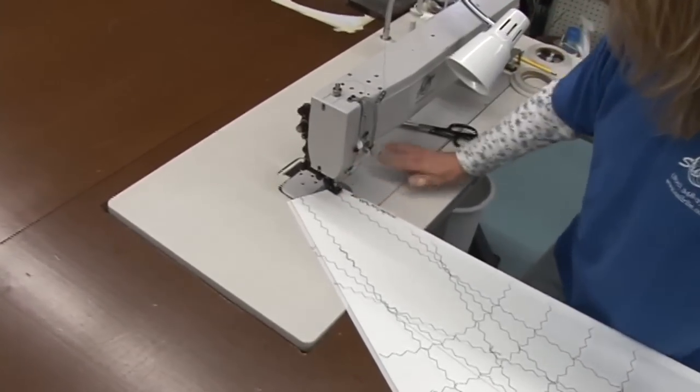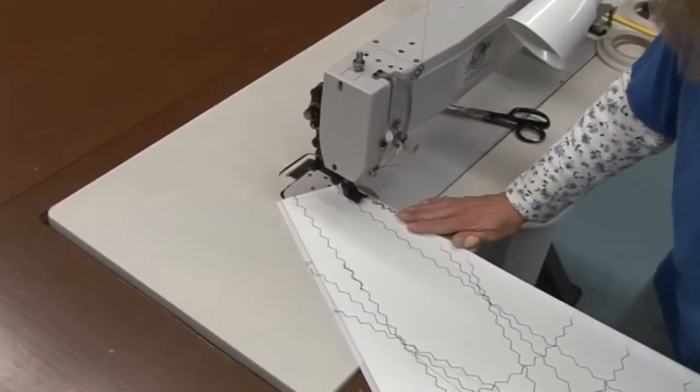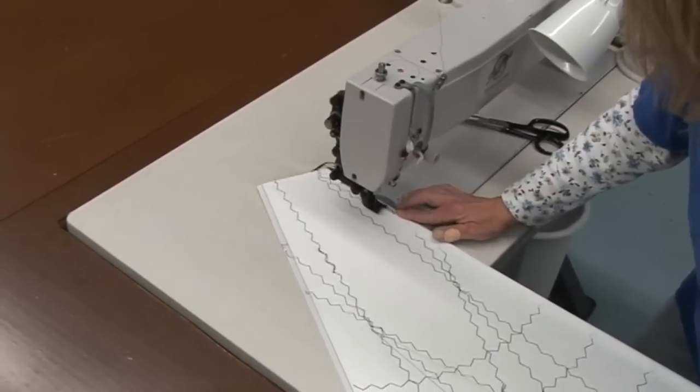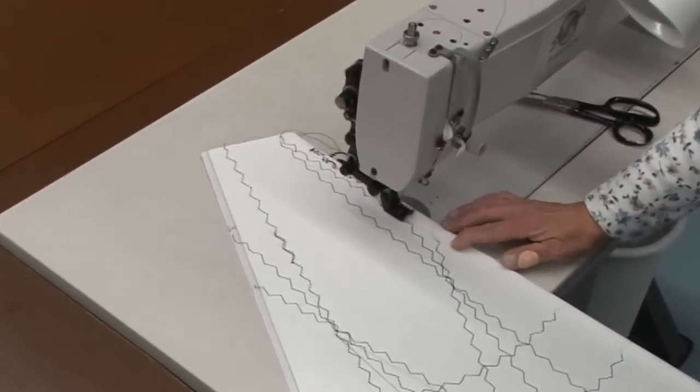Once the leach line is secured, we'll just sew along the edge of the Dacron tape all the way down its length with the zigzag stitch. Be sure you do not sew the leach line.